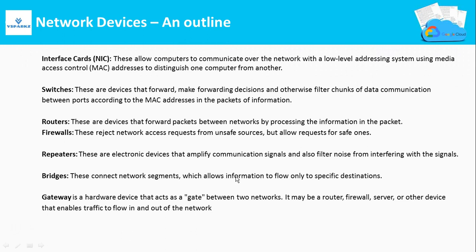A firewall is a system designed to prevent unauthorized access to or from a network. Repeaters are devices that amplify your signal for long-distance communication. Bridges are used to connect network segments, allowing information to flow only to specific destinations. Gateways are network hardware devices that act as a gate or door between two networks.